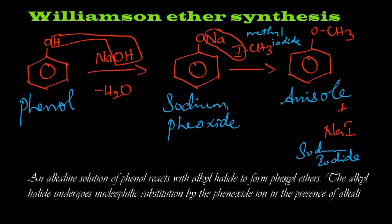To summarize: an alkaline solution of phenol reacts with alkyl halide to form phenyl ether. The alkyl halide undergoes nucleophilic substitution by the phenoxide ion in the presence of alkali. In this reaction we prepare ether from phenol.